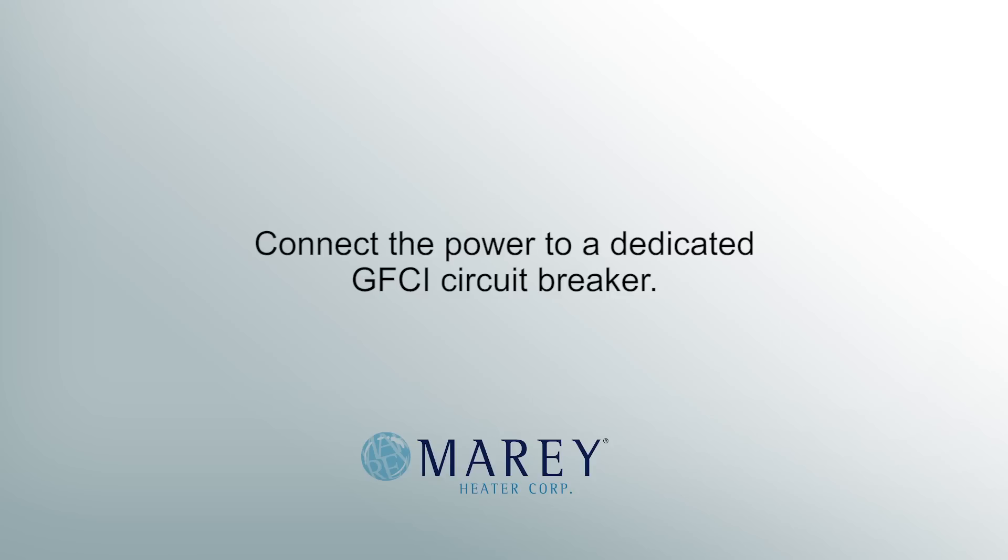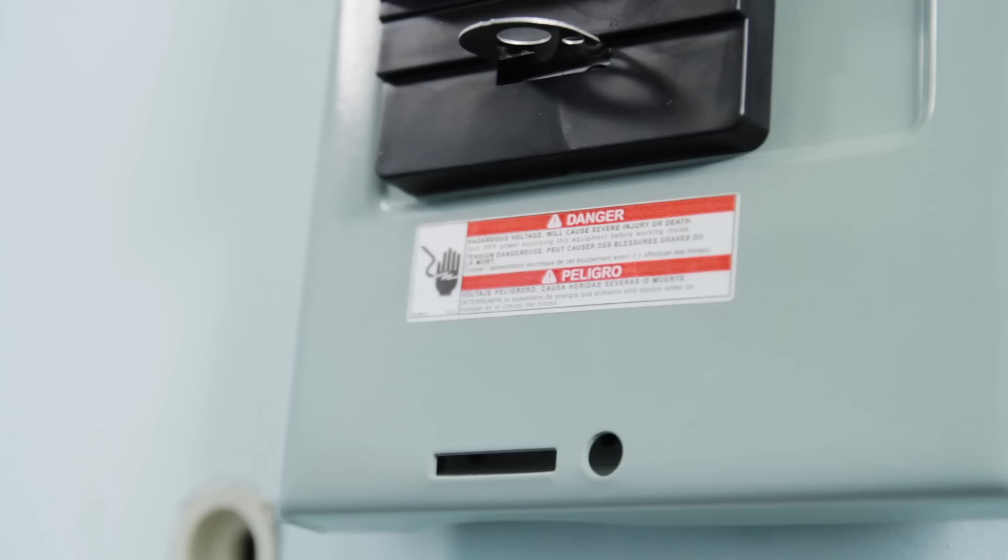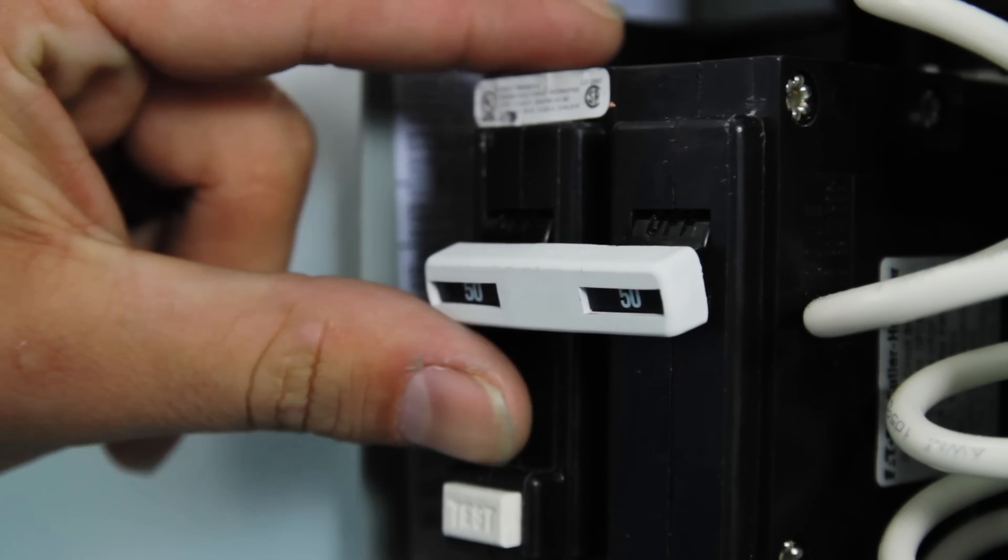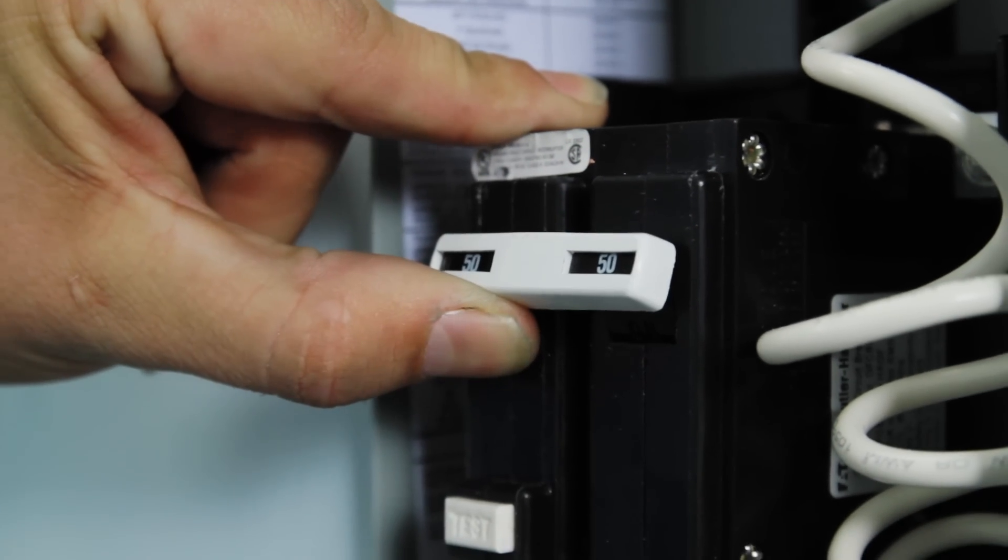Connect the power to a dedicated GFCI circuit breaker. These units must be grounded. Once power is correctly connected, you can switch the breakers to the on position and turn on your water heater.